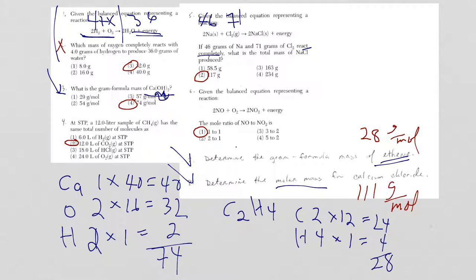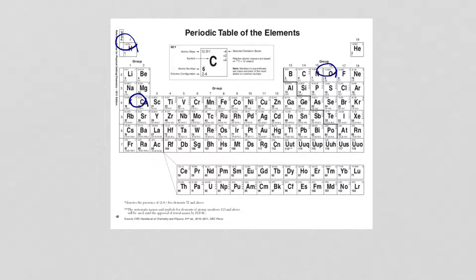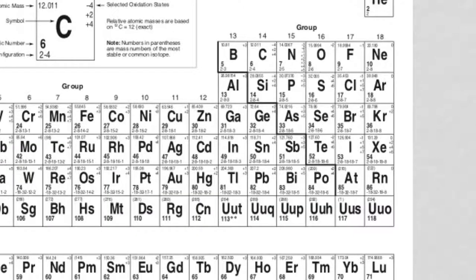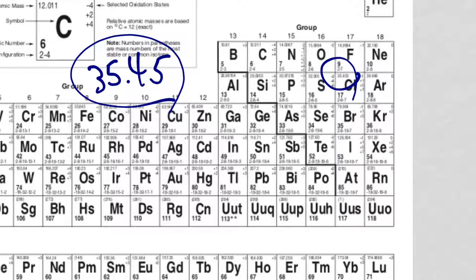Now for calcium chloride. Again in the problem, in the typewritten problem, they gave you the formula. I'm going to put it up here, CaCl2. So I have a calcium, chlorine, 1 and 2. Calcium is 40. The one that's a little dicey is chlorine. If I go to the periodic table and I blow up chlorine for you, sorry I'm going to get a little messed up with the motion here.